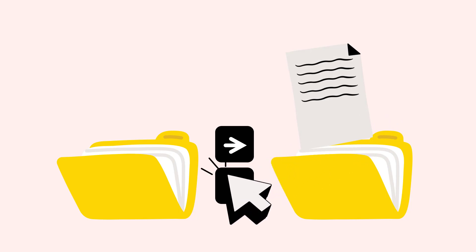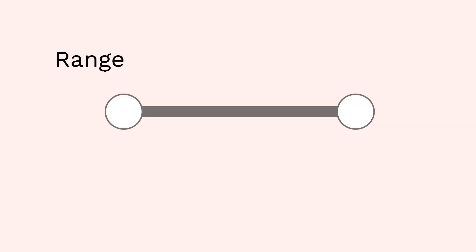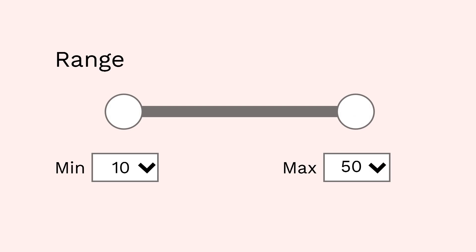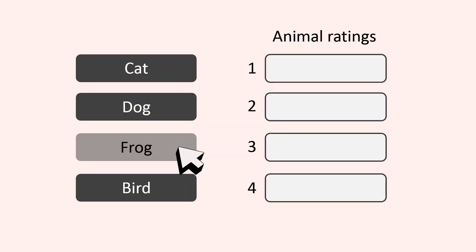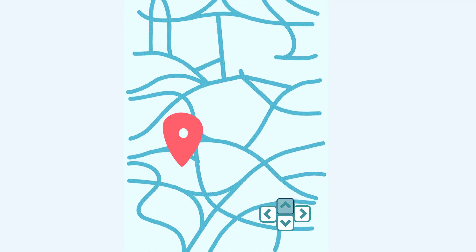If you have interactions that rely on a dragging motion, there must be a pointer-based alternative with just one point of contact. This includes single taps and clicks, double taps and clicks, and long presses. Some examples might be using a drop-down menu or text input to provide a precise value instead of a slider. You can also move to another method: sorting items by tapping the item to engage it, then tapping where to move it to instead of holding for drag and drop, or moving around a map using arrow buttons instead of dragging.